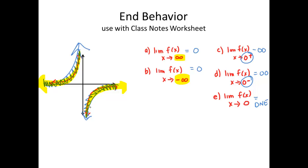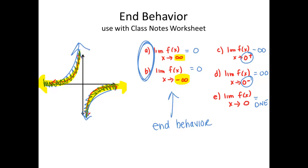Which means that the limit as I approach zero — because one's going down and one's going up — this limit does not exist. That's different from our end behavior, because end behavior is looking at what happens at the ends of my graph.